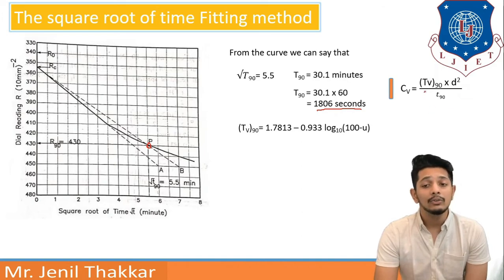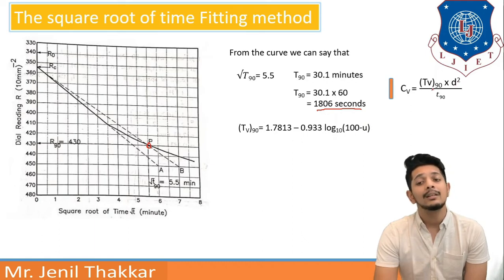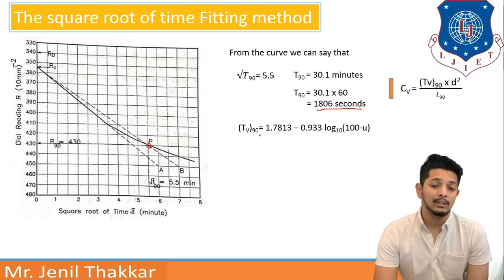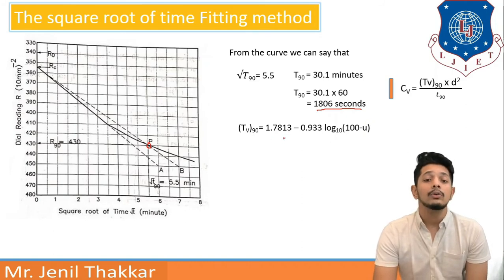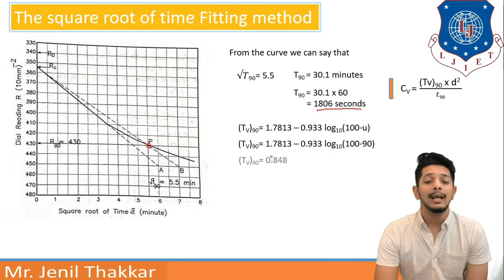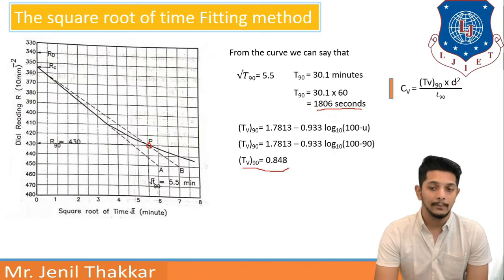We want other values in this formula. We have t90 only. Now we need d as well as tv. Now for tv90 as time factor we have to use formula for greater than 90 percentage of degree of consolidation as u is greater than 60 percentage as 90 percentage.